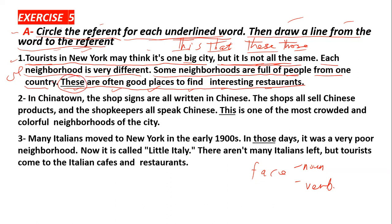These — it refers to what? تشير إلى ماذا? These are often good places to find interesting restaurants. These refers to 'some neighborhoods,' تشير إلى بعض الأحياء. This is the reference, هذا المرجع بالنسبة لكلمة These.